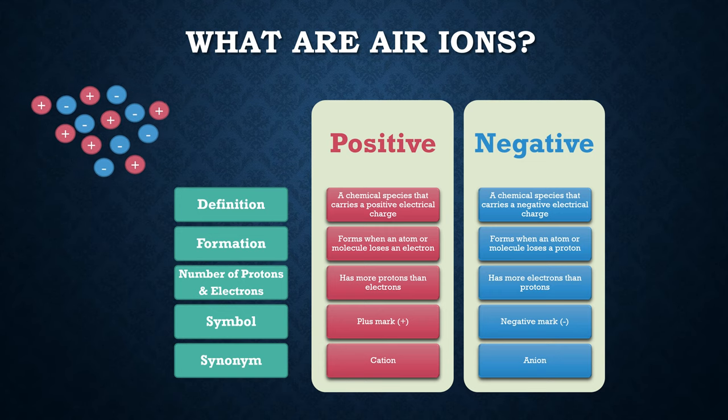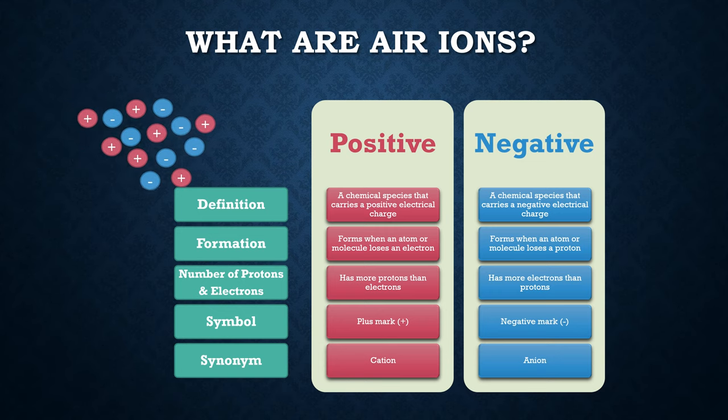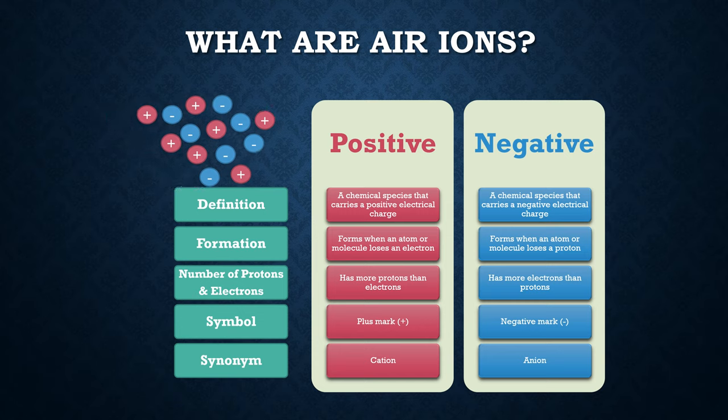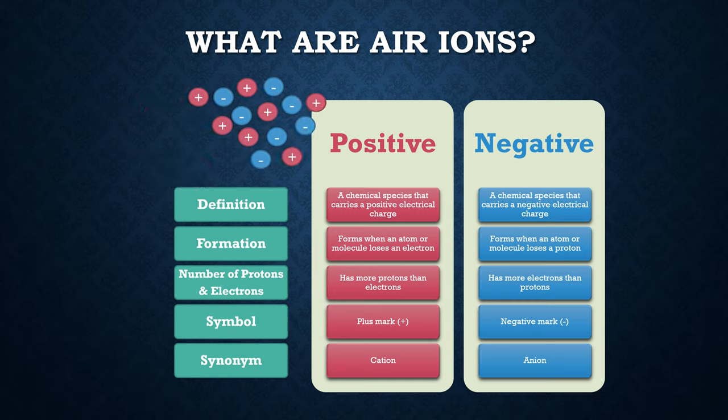We have positive and negative air ions. A positive ion carries a positive electrical charge — it forms when an atom or molecule loses an electron, giving it more protons than electrons, and we use the plus mark. A negative air ion carries a negative electrical charge. It forms when an atom or molecule loses a proton, giving it more electrons than protons, and we use the negative mark.